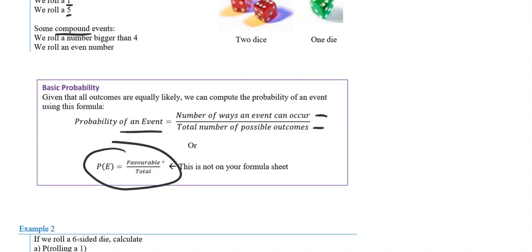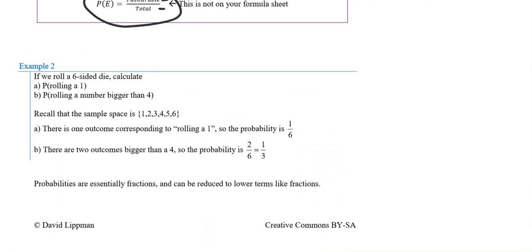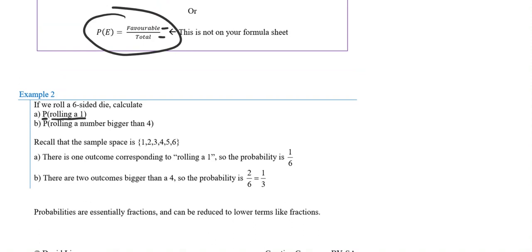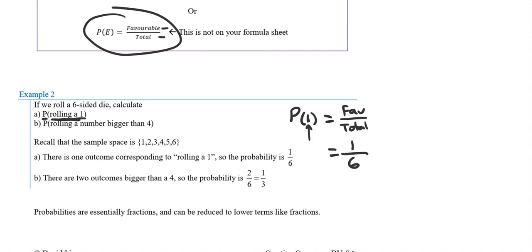In short: P(E) equals favorable over total. Looking at an example — if we roll a six-sided die, calculate the probability of rolling a one. So P(1) equals favorable over total. There's only one way to roll a one, out of a total of six outcomes. So the probability is one over six.